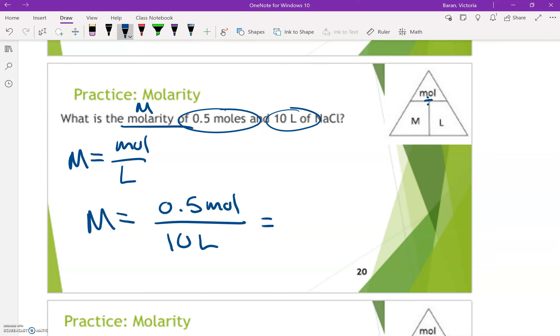So I'm just going to do 0.5 moles divided by 10 liters. 0.5 divided by 10 is 0.05. And then we write big M for molarity. It's pretty easy, right? Molarity big M equals moles divided by liters and they gave me moles and liters.